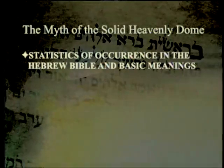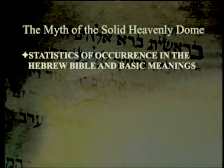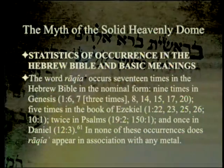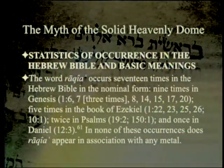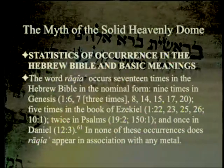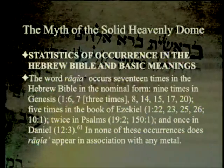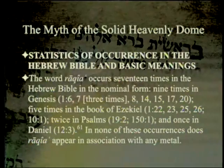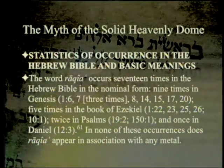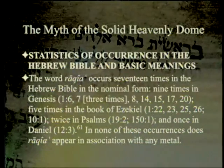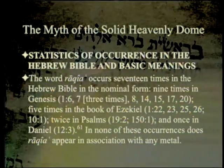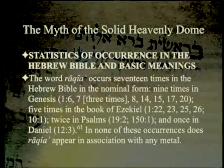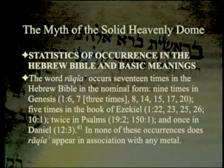The word Rakiah occurs 17 times in the Hebrew Bible in its nominal form: nine times in Genesis 1, five times in Ezekiel (primarily chapter 1, the wheel-in-the-wheel passage, but also chapter 10), twice in Psalms — Psalm 19:2, 'the heavens declare the glory of God and the firmament showeth his handiwork' — once in Psalm 150, and once in Daniel 12:3, 'this will shine like the firmament.' In none of these occurrences does Rakiah appear in association with any metal; you have to supply metal to make it work.